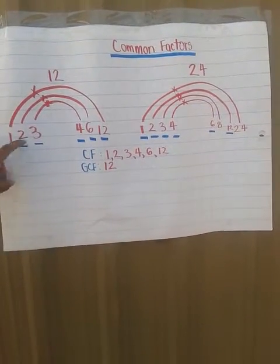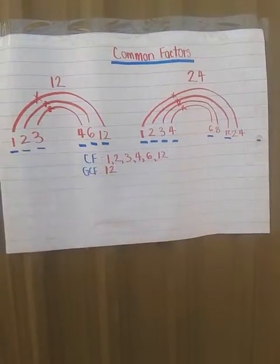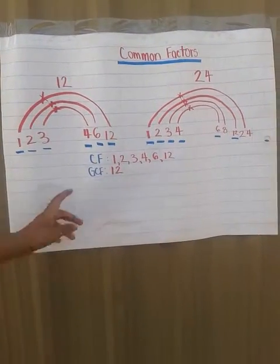So the common factors are 1, 2, 3, 4, 6, and 12. I just listed them all below.